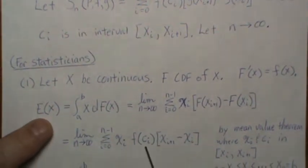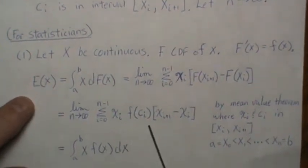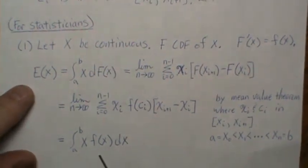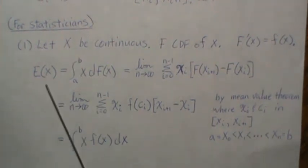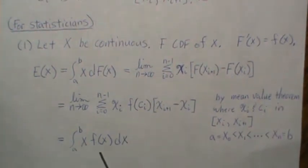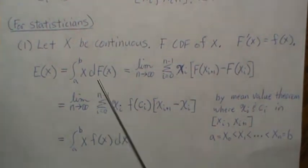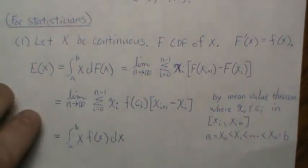This ends up being this, and then this is just some small dx, which is the notation for Riemann integration. That's what we expected. If we have a continuous variable and we want the expected value of X, we calculate it as x times f(x) dx. So Riemann-Stieltjes integration is what we expected as a statistician.